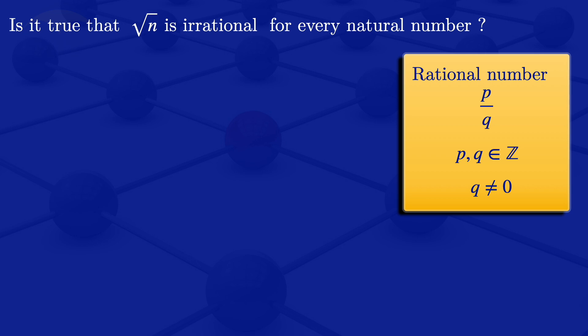We are looking at the definition of a rational number because a number is said to be irrational if it is not rational. For example, the square root of 4 is equal to 2. 2 can be written as 2 over 1, which is of this form.